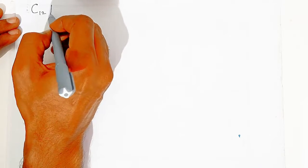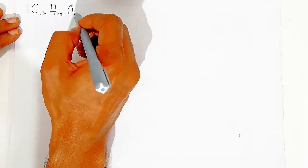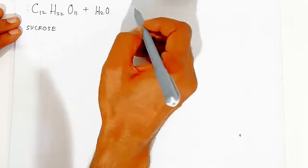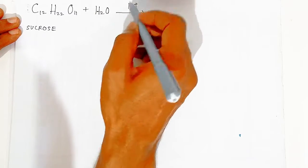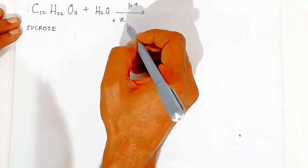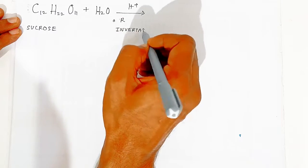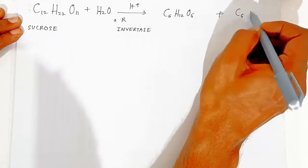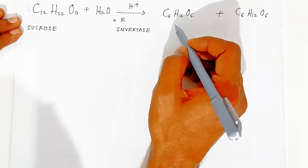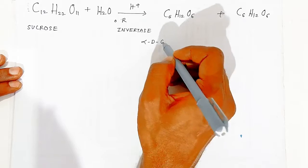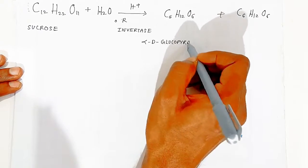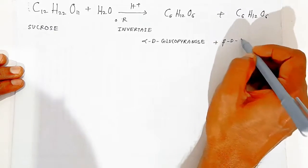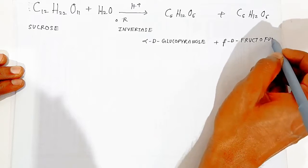The molecular formula of sucrose is C₁₂H₂₂O₁₁. On acid hydrolysis, or using the enzyme invertase, sucrose produces two monosaccharides, both with formula C₆H₁₂O₆: the first is alpha-D-glucopyranose and the second is beta-D-fructofuranose.